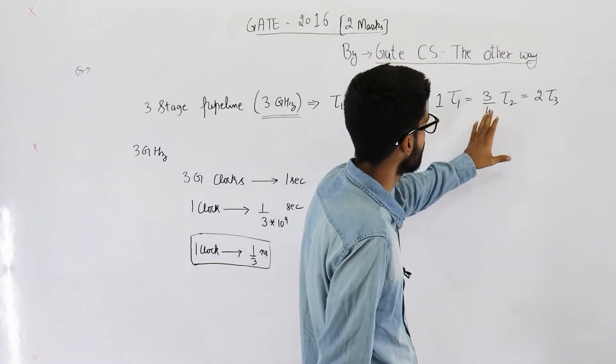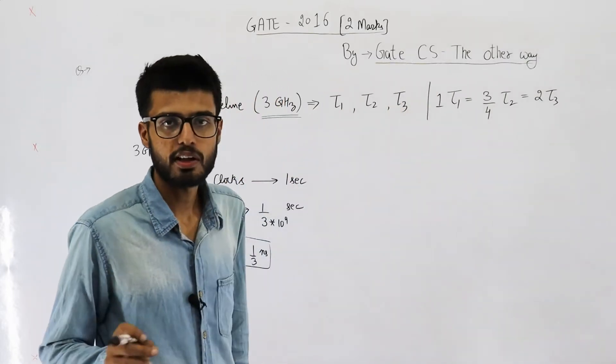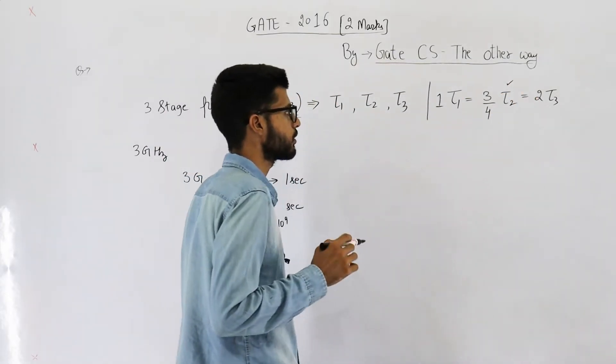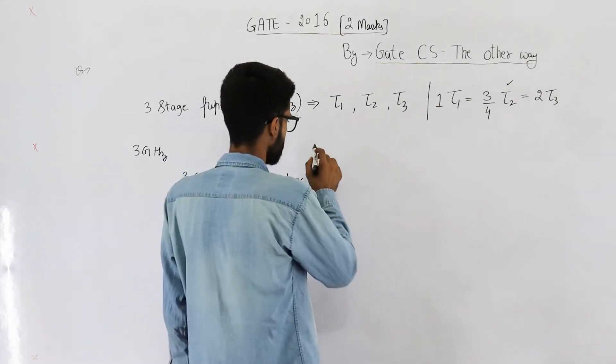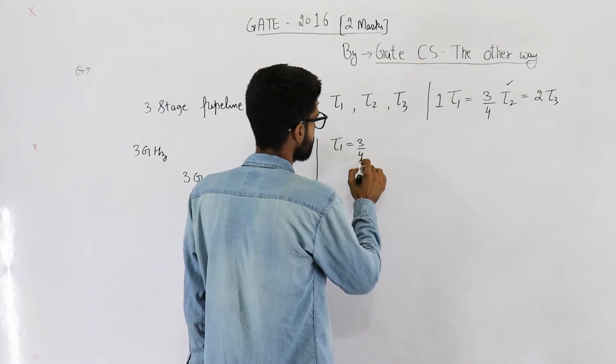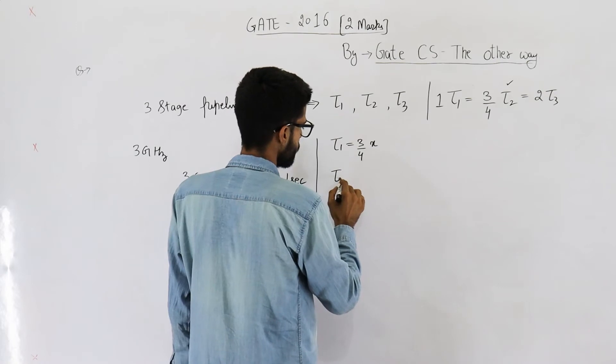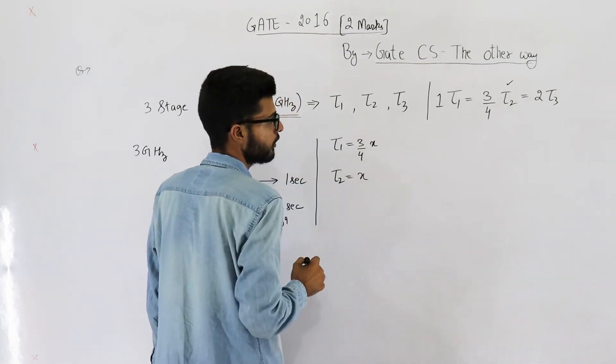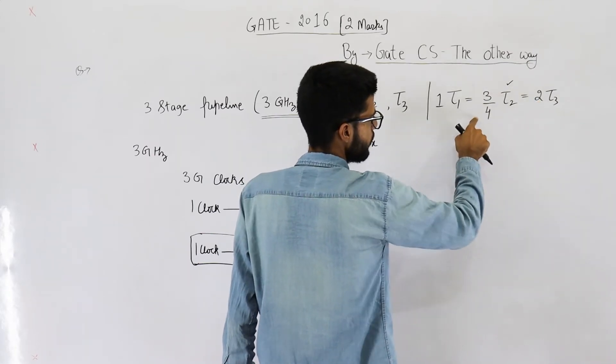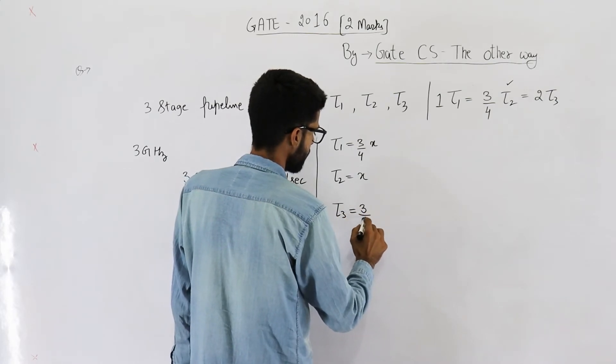Because all of these three are compared with each other, you can just assume one of them to be x. I'll go with tau2. I'll assume tau2 to be x. From here I'll get tau1 is equal to 3 by 4x because I've substituted x here. Tau2 is equal to x. And you bring this to this side, so tau3 becomes 3 by 8x.